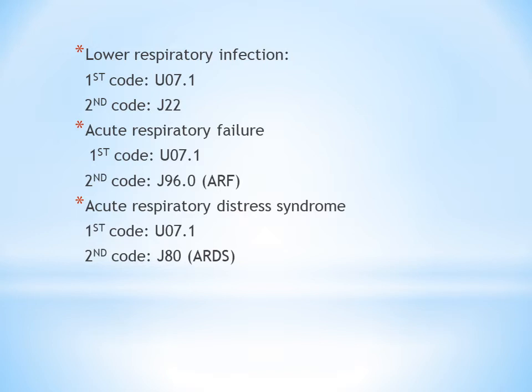For lower respiratory infection with COVID-positive patient, we code U07.1 first, then the lower respiratory condition code. Similarly, for acute respiratory failure, we code U07.1 first, then J96.0 for acute respiratory failure. For acute respiratory distress syndrome, we code U07.1 first, then J80. Any respiratory manifestation follows this same sequence: U07.1 first, then the respiratory manifestation code.